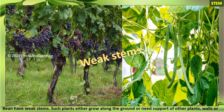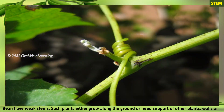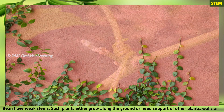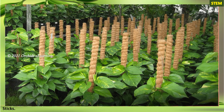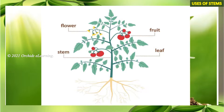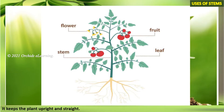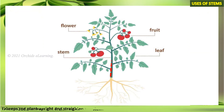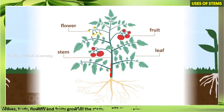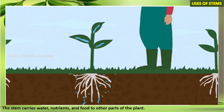Plants such as grapevine and bean have weak stems. Such plants either grow along the ground or need the support of other plants, walls, or sticks. Uses of stems: it keeps the plant upright and straight. Leaves, buds, flowers, and fruits grow on the stem. The stem carries water, nutrients, and food to other parts of the plant.